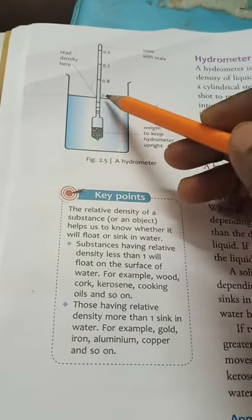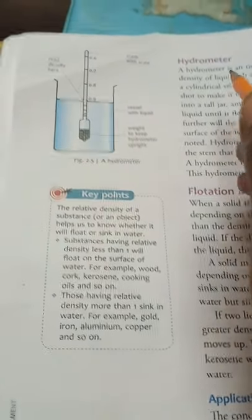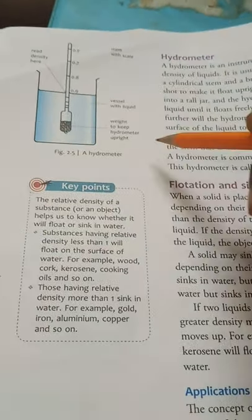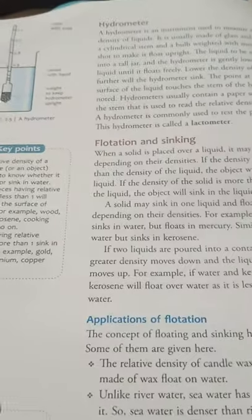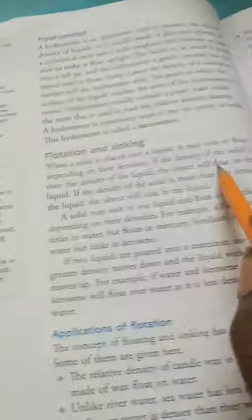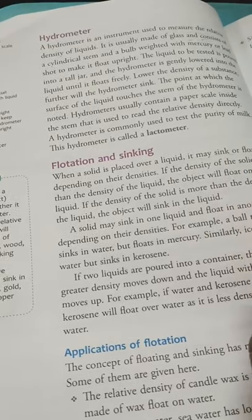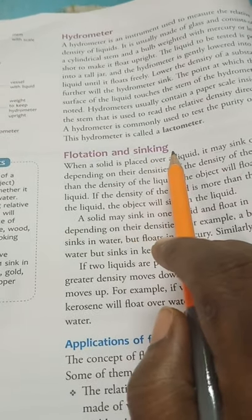By reading these graduation marks we can directly find out the relative density of liquids. Now let us come to the topic of flotation and sinking. When a solid is put inside a liquid there are two possible outcomes: first, it may sink; second, it may float. In which condition will the object float, and in which condition will it sink?